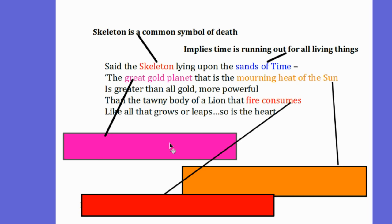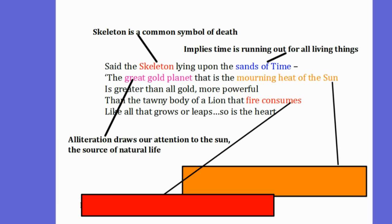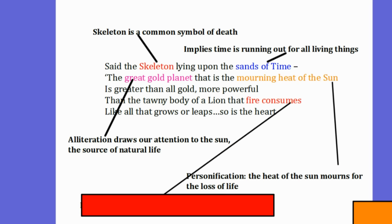This phrase here, great gold planet, is of course an alliteration. And it draws our attention to the sun, the source of all natural life. The poet is saying here that the sun mourns. Through personification, the heat of the sun mourns for the loss of life. As time passes, all life will die.